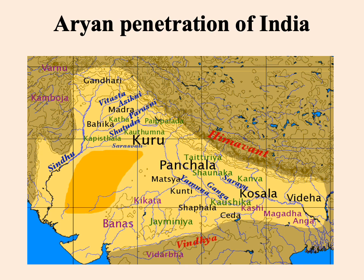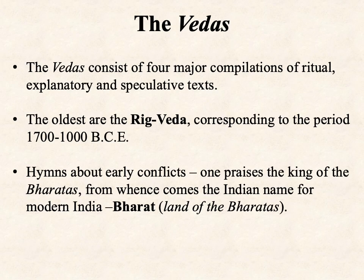The Aryans made their way down the Ganges River. The Ganges River would end up becoming a very holy, sacred river with respect to Hinduism, which corresponds perhaps to the manner of interaction between the Aryan people and that river early in their history. Concerning the Vedas, they consist of four major compilations of ritual, explanatory, and speculative texts, grouped into four categories that to some degree reflect their chronological development. The oldest are the Rig Veda, corresponding to the earliest history of the Aryan people between 1700 and 1000 BCE.